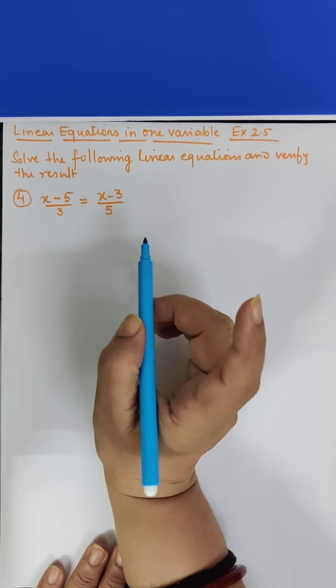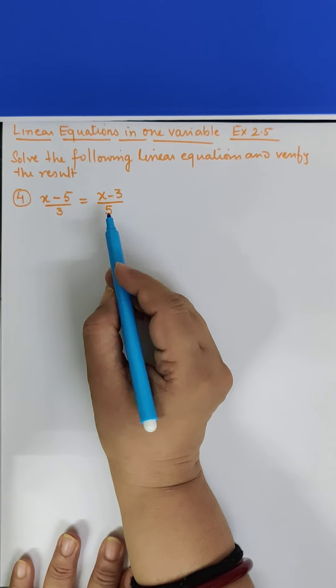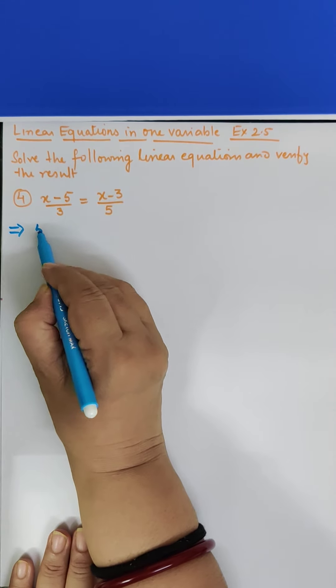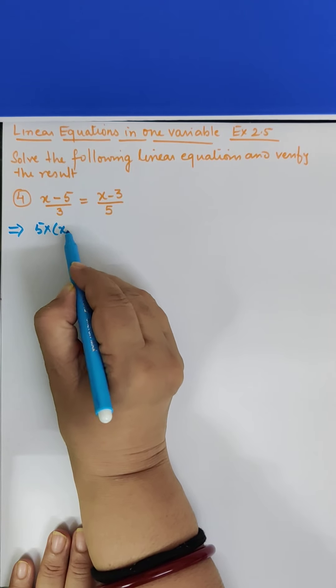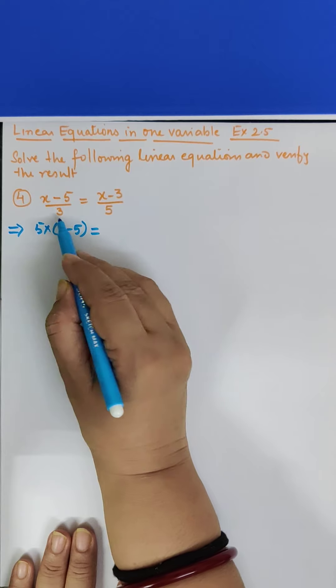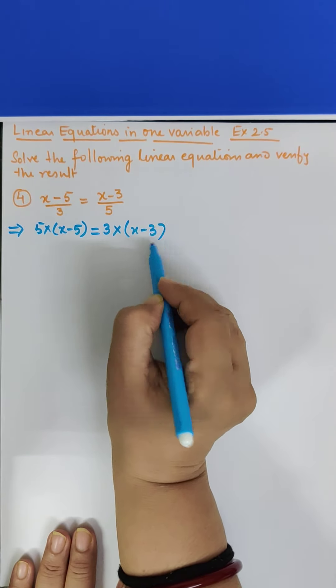So first step is we will cross multiply it. 5 is going to go there and 3 is going to go there. So we get 5 into x-5. This 5 is going to go there. Equal to 3 is going there. It becomes 3 into x-3.